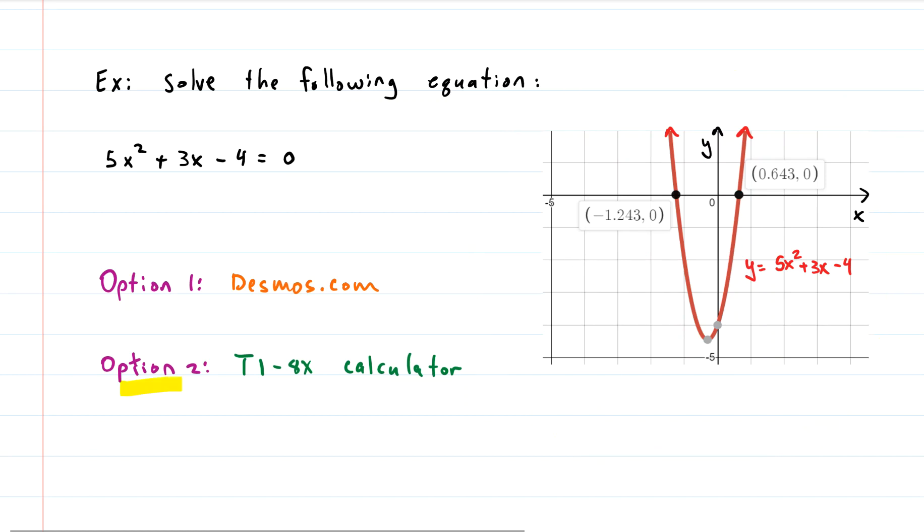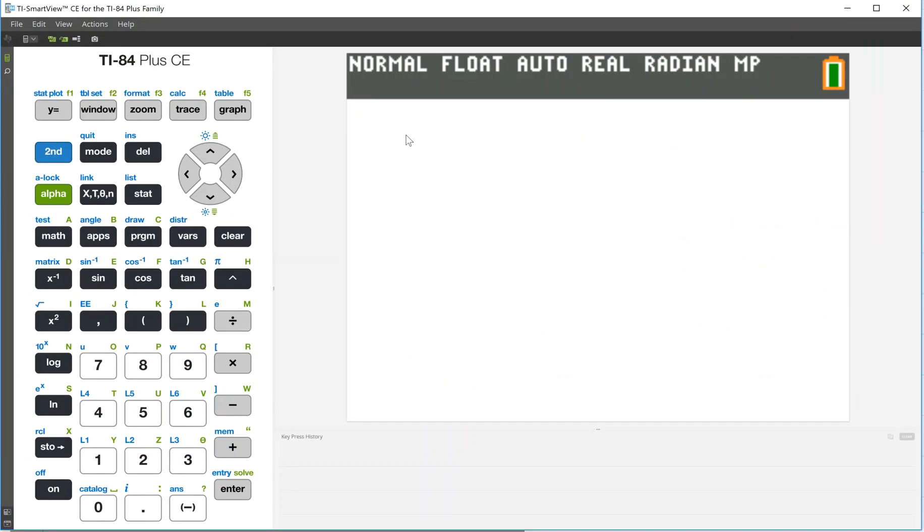Let's use our second option now. Let's use the TI-84 calculator. Alright, here's our calculator. Now we'll want to graph this first, so we'll go to the graph functionality up in the top right. This is the space where we will be graphing. You can see it's blank.